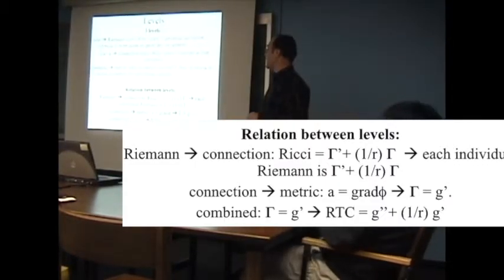On this side, we know how to compute the Riemann curvature given the connection. Remember, we said that you had a structure like this. The sum of the Riemanns was called Ricci, and it was a derivative of a connection plus 1 over R times a connection. And remember I told you that each Riemann actually has this structure.